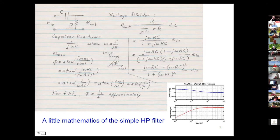The phase of that complex number is the arc tangent of its imaginary part divided by the real part. That's just 1 over omega RC, or the frequency at which the high-pass filter is set divided by the frequency. This is the phase in radians.